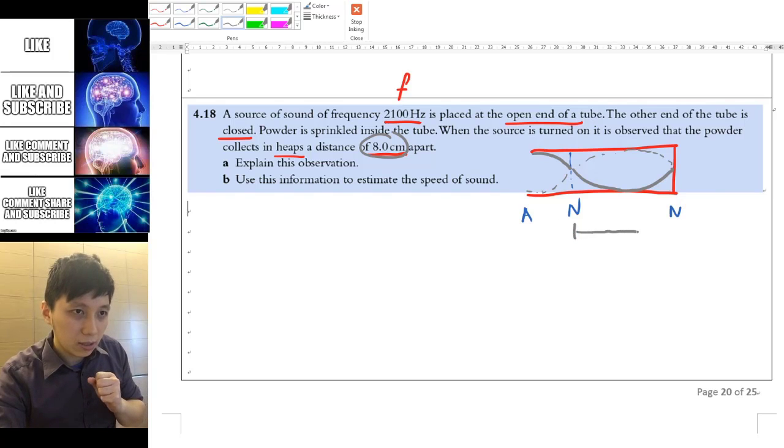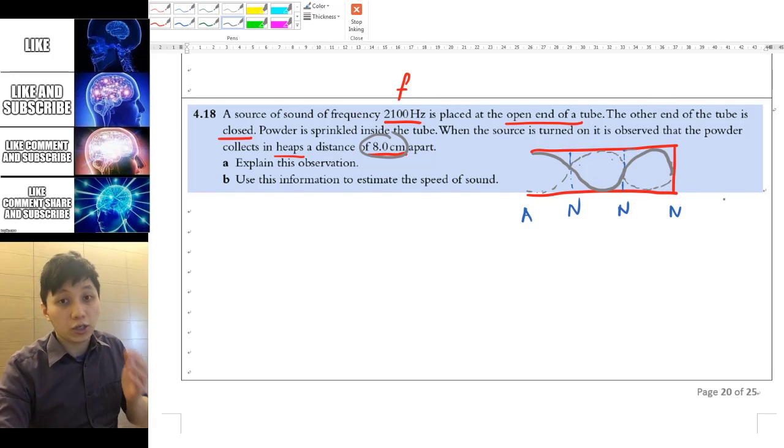So think about the string in that case. That particular part of the particle doesn't actually move at all. So this is the same idea where the particle would get collected at that particular position. And therefore that means between the consecutive nodes,